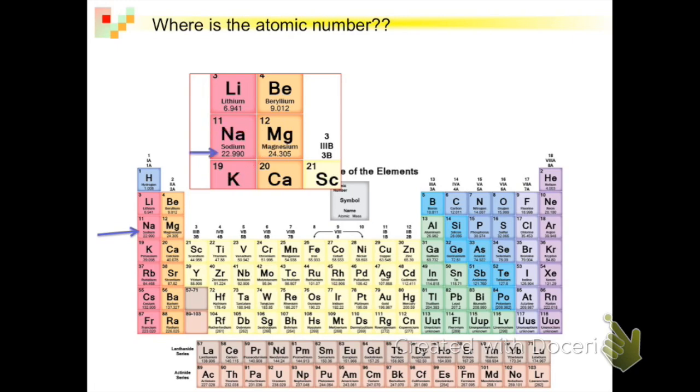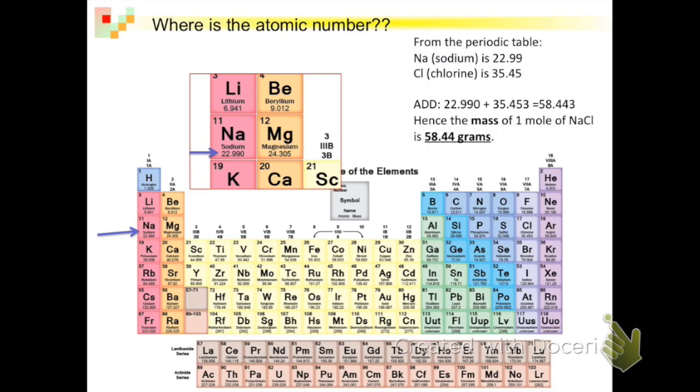Obviously, the next part of sodium chloride is chlorine, and that's over here on the periodic table. Its atomic mass is 35.45.